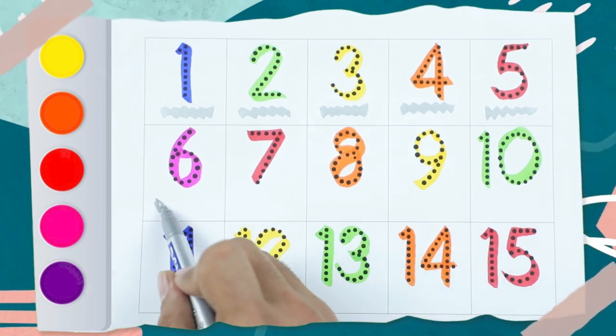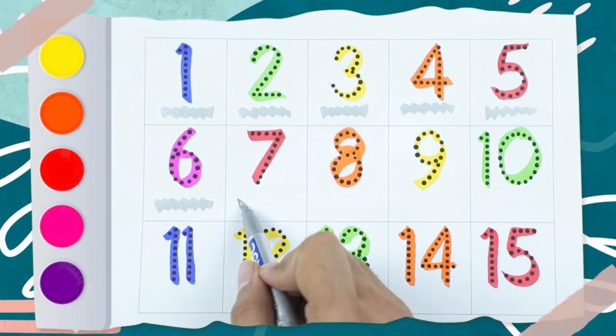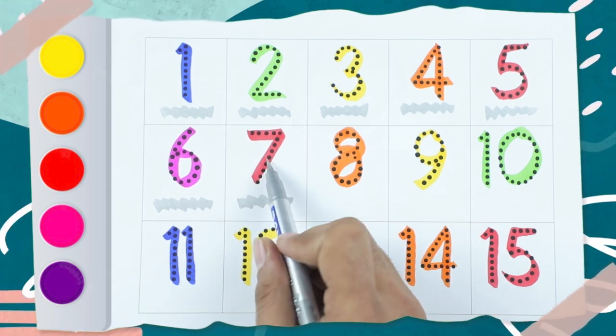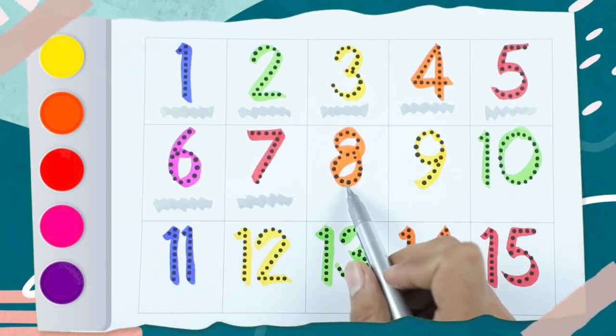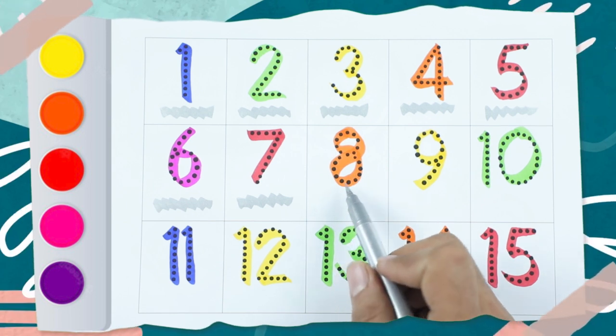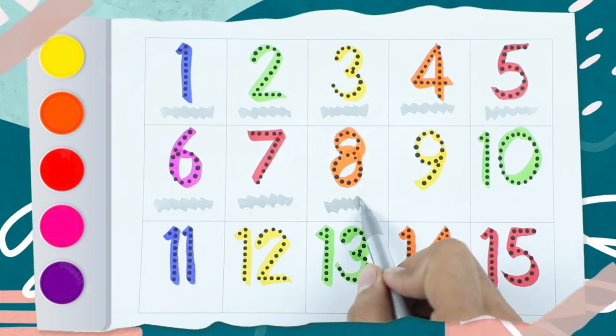Pink is 6 number. 7 number is red color. Which number? 8. And which color? Orange color, 8.